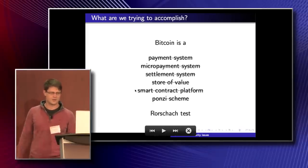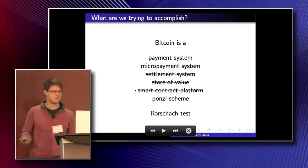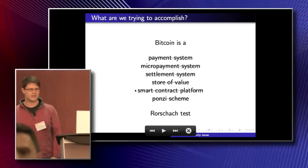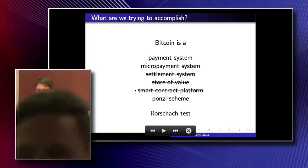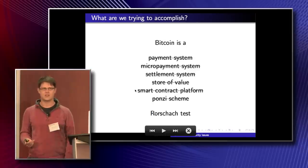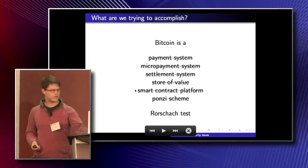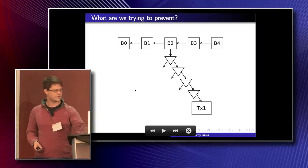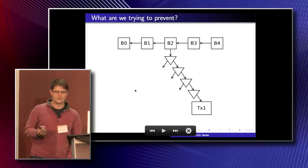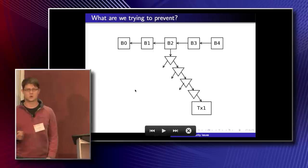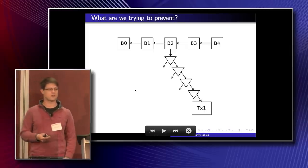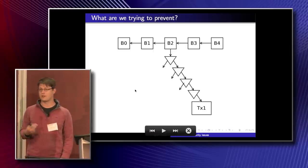Nobody really agrees on what Bitcoin is meant to be. But as much as we disagree, there really are some key things which all the different visions of what Bitcoin could be do share. Chief among them is validation. We can ask the question: what are we trying to prevent? We're trying to prevent an invalid transaction.